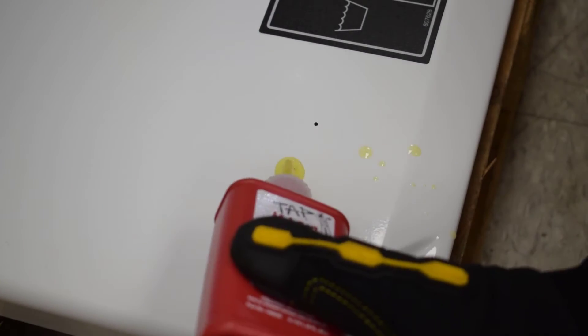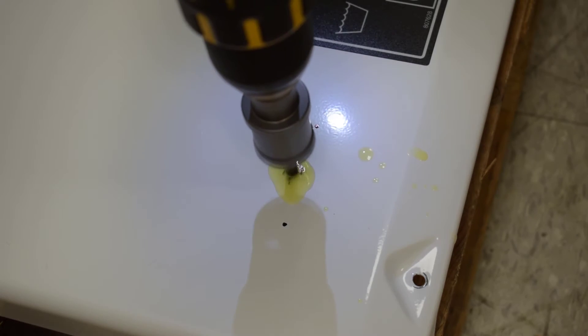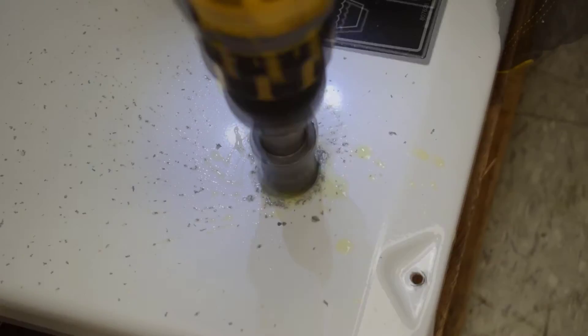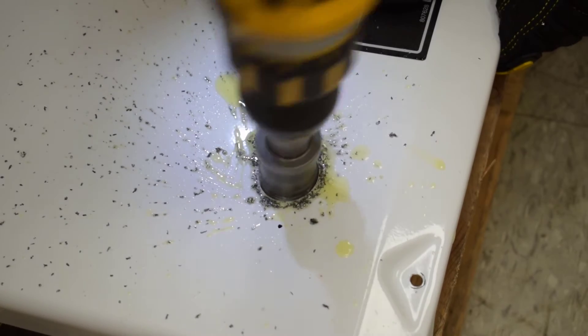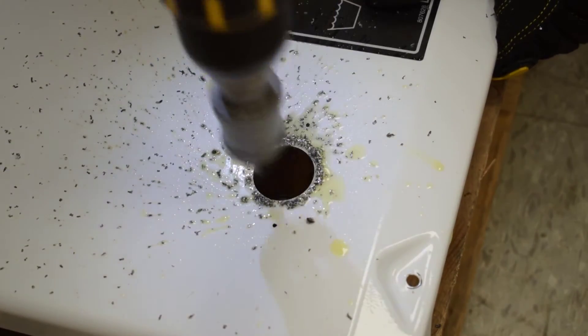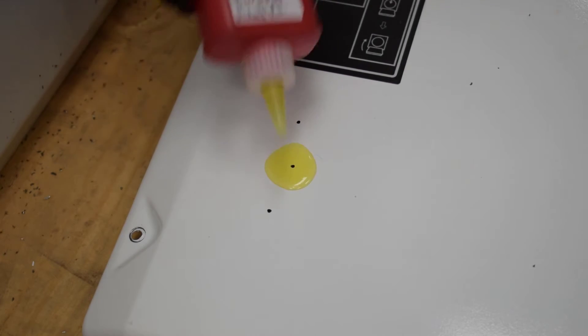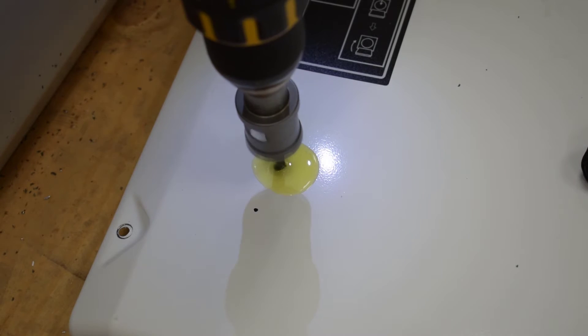Using the recommended carbide-tipped hole cutter and cutting fluid, dab a sizable amount onto the surface area before cutting and drill a hole through the center. Note that using more cutting fluid is better for both lubrication and protection of both the drill bit and panel.